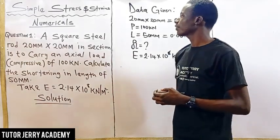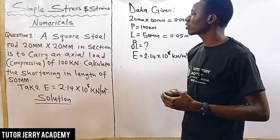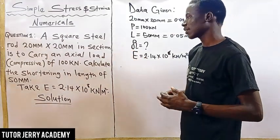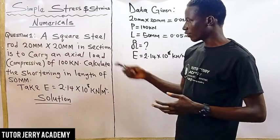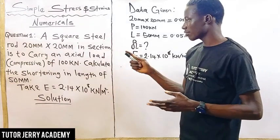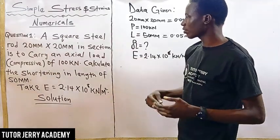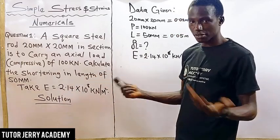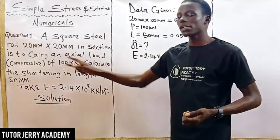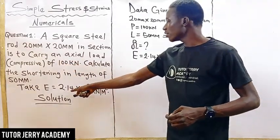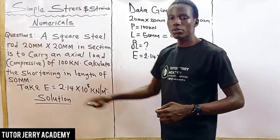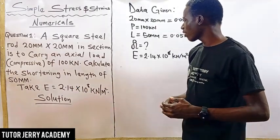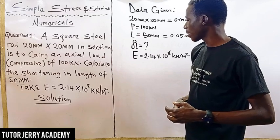The question we have here says: a square steel rod 20mm by 20mm in section is to carry an axial load of 100 kN. The load is compressive on the rod. We are asked to calculate the shortening in length — that's the change in length — of 50mm. We are given E, which is our modulus of elasticity, equal to 2.14 times 10 to the power of 8 kN per meter squared.